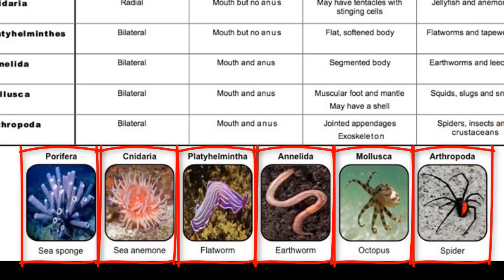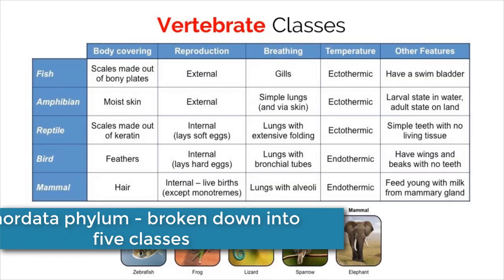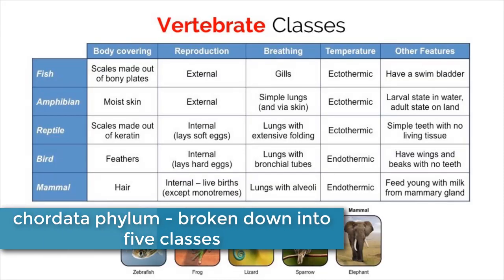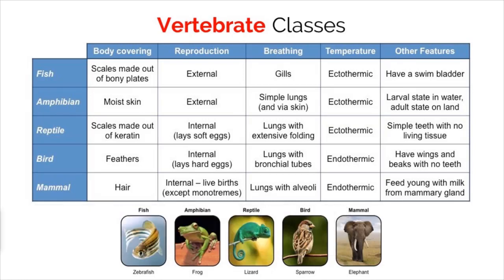Finally, the Arthropoda phylum consists of spiders and insects. These organisms show bilateral symmetry and have jointed appendages based around an exoskeleton. The seventh phylum is Chordata, which contains all vertebrate animals. We can break down the Chordata phylum into five different classes: fish, amphibians, reptiles, birds, and mammals. Review the characteristics and make sure you can distinguish between these five vertebrate classes for the IB exam.